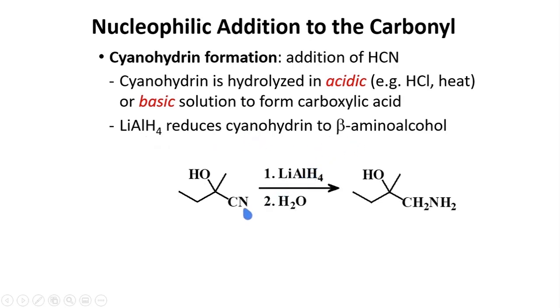Cyanohydrin has a C triple bond N. This reducing agent will add hydrogen to carbon and nitrogen. And ultimately, you will produce a beta-amino-alcohol.